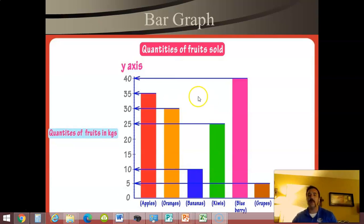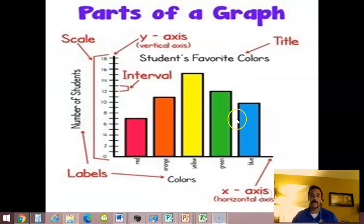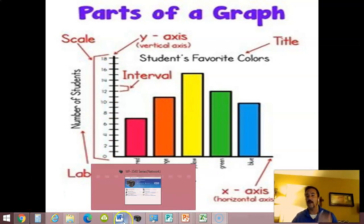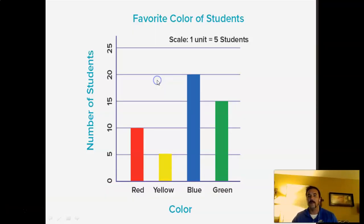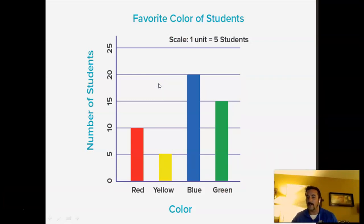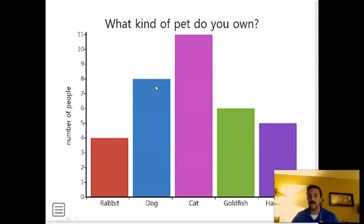But again you can see here right off the bat what's the most popular fruit? Blueberry. What's the least popular fruit? Grape. Here again what's the students' favorite color? You can tell without even knowing the number - yellow, it's the biggest bar, that's the most popular. This class is blue. What kind of pet do you own? In this case obviously 11 people own cat, that's the most popular.